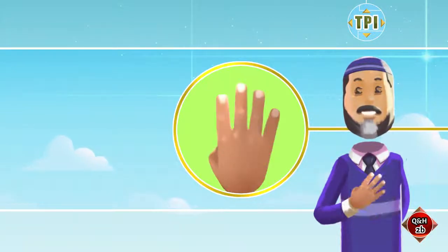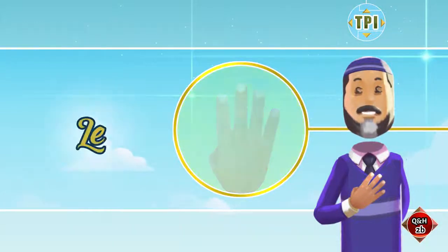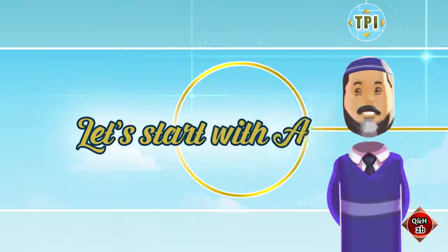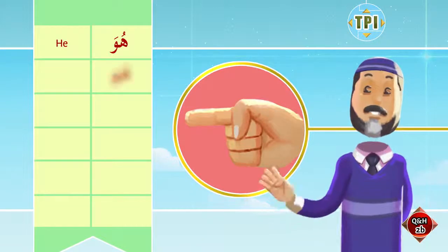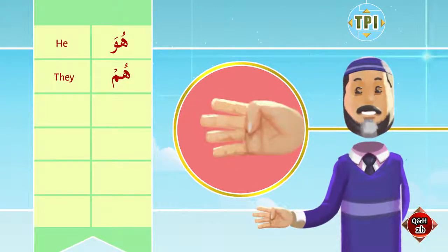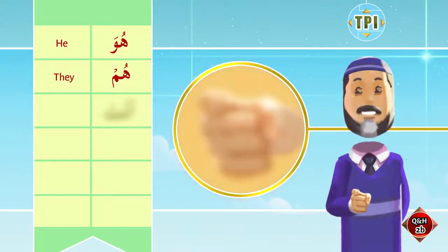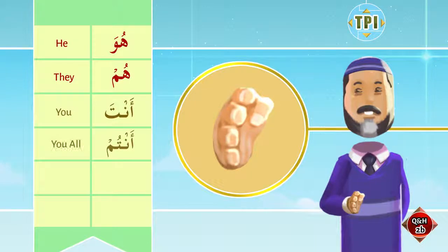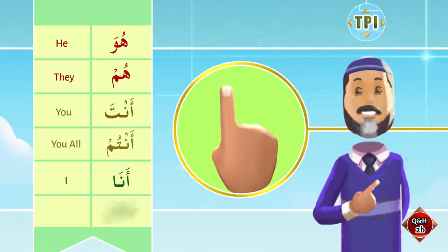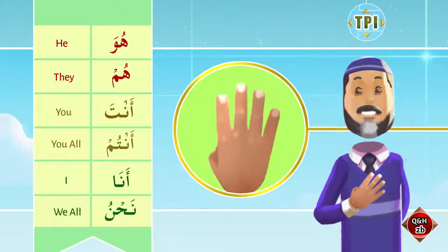When you say 'nahnu,' point four fingers towards yourself. So let us start with actions: hua — he, hum — they, anta — you, antum — you all, ana — I, nahnu — we.